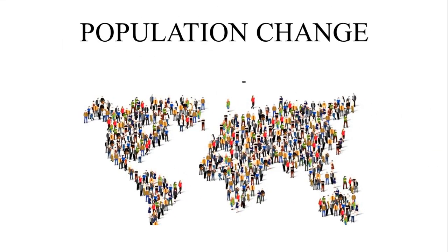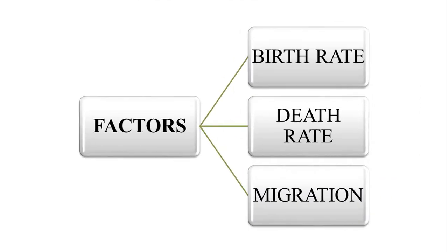Population change is a natural process. The population of a place or country changes with time. Population change refers to the change in the number of people in a given area during a specific period of time. Birth rate, death rate, migration, and natural factors determine population change.